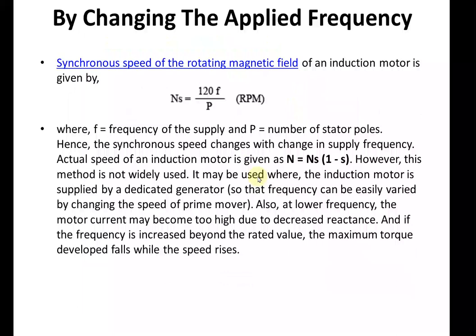In order to prevent these problems, we go to the next method — changing the applied frequency. The formula is: synchronous speed Ns = 120f / P, in rpm. So frequency is directly proportional to the synchronous speed. By changing the frequency we can change the synchronous speed, where P is the number of stator poles. The actual speed of the rotor is given as N = Ns × (1 − slip).